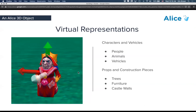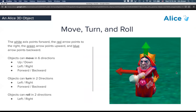An Alice object is a virtual representation. When we get into perusing the gallery, you're going to see things — people, animals, vehicles — those types of things for making your environment more lush. We have trees, furniture, rooms, things like that to build out the world. The arrow is sort of showing you the dimensions, so it has both height, width, and depth. One of the major components of Alice is the concept of move, turn, and roll. Since we are 3D, an object can move in six directions: they can go up, down, left, right, forward, and backwards.